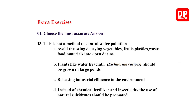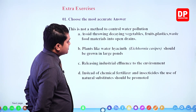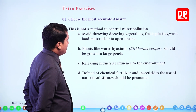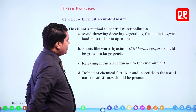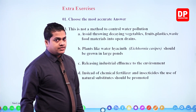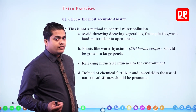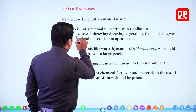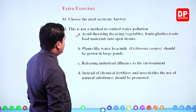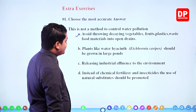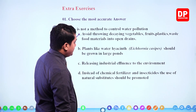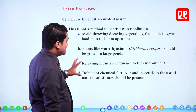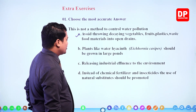Question 13: this is NOT a method to control water pollution. First option: avoid throwing decaying vegetables, fruits, plastic waste, and food materials into open drains — by avoiding throwing garbage into open drains we can minimize water pollution, so this is correct. Next: plants like water hyacinth should be grown in large ponds — growing aquatic plants is okay, so this is also correct.